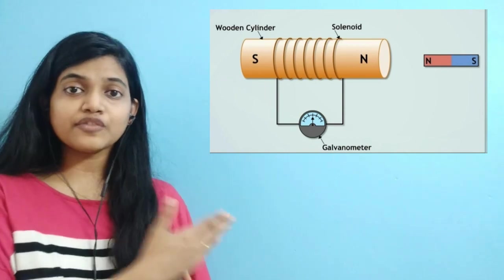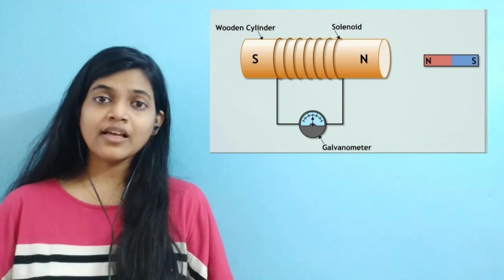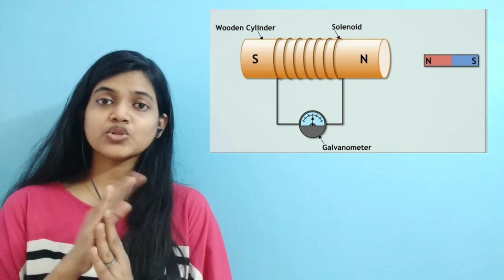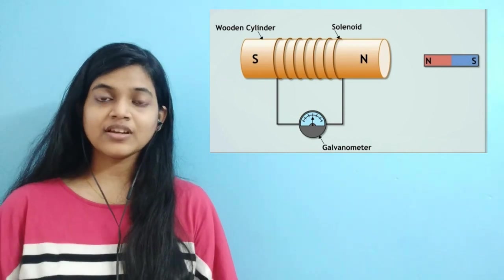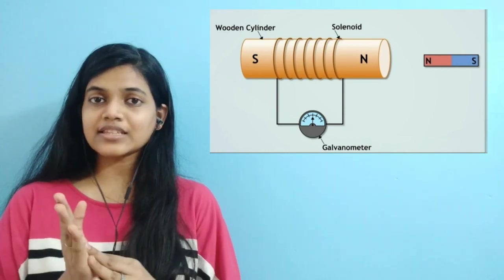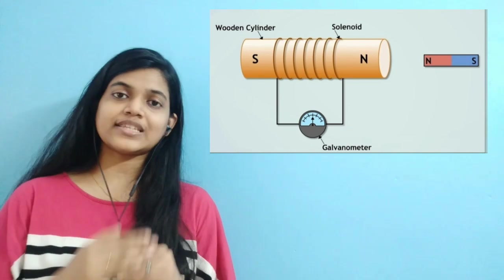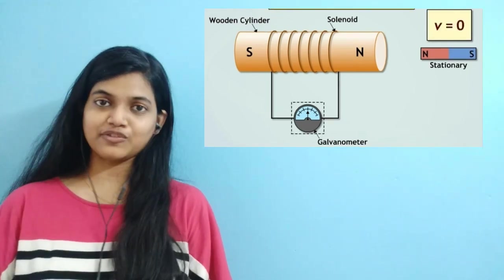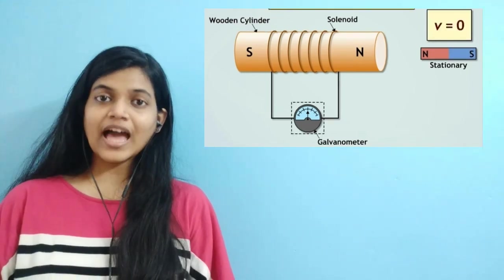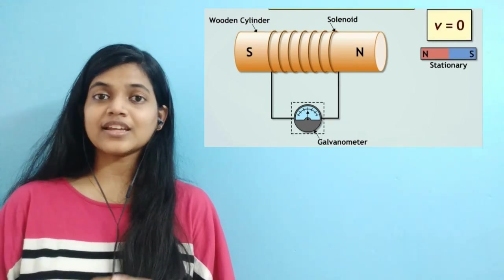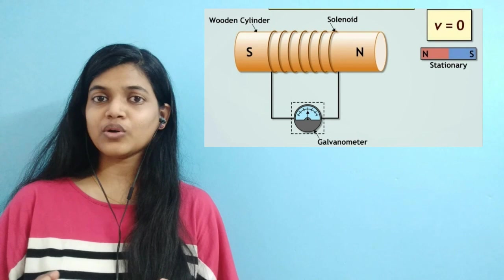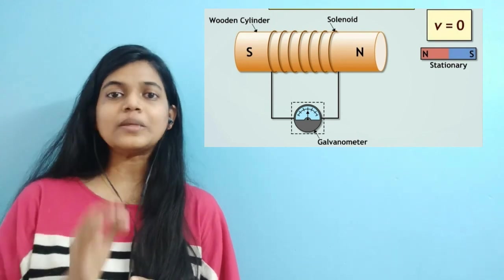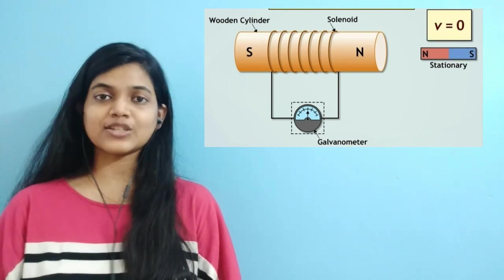The galvanometer detects the current flow through the coil. Whenever there is a current flow in this coil, the galvanometer shows deflection towards the right side or towards the left side depending on the direction of current flow. Whenever there is no current flow, the galvanometer needle rests at zero.